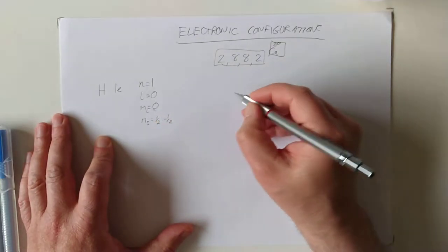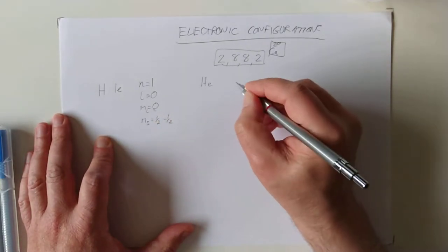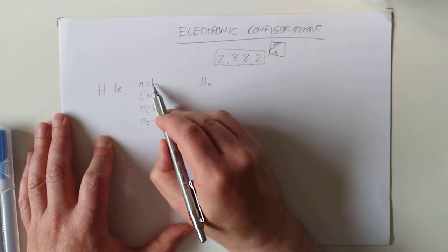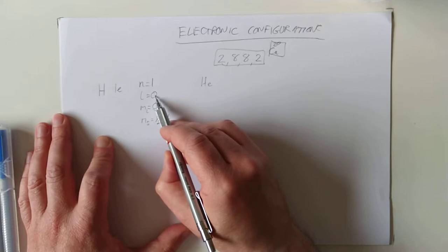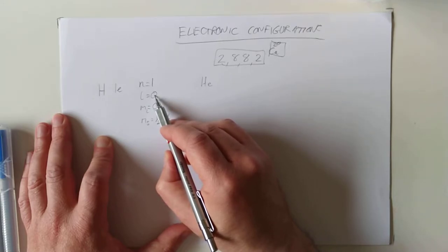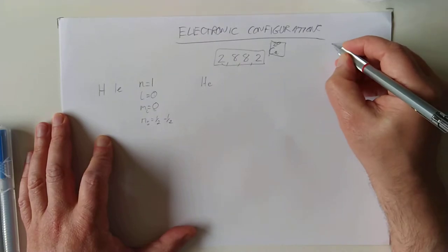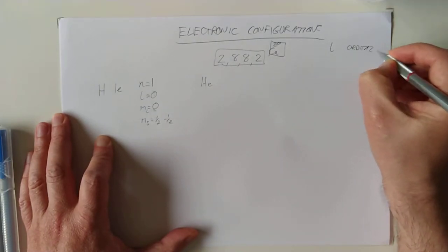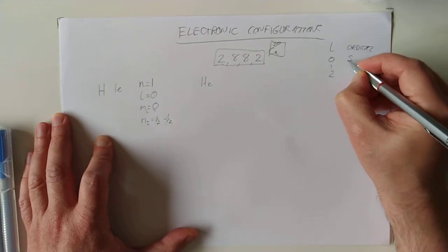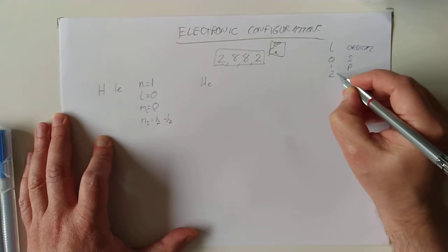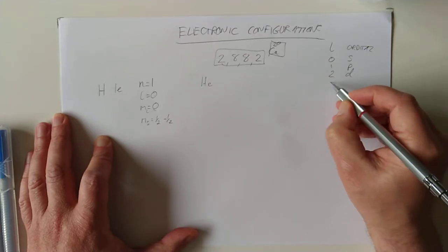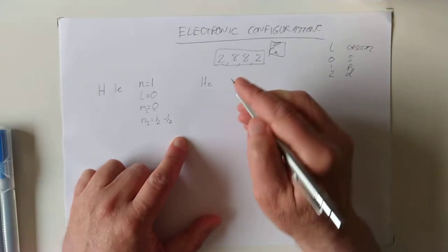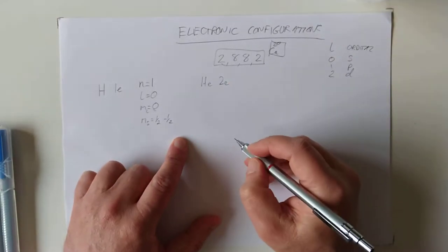If we skip across to element 2, which is helium, we now have two electrons. They are still in the first energy level, and they're in an s orbital — that's what that value tells you. Remember, we had different values of l and different types of orbital: l = 0 gives s orbitals, l = 1 gives p orbitals, l = 2 gives d orbitals — there are f orbitals as well, but we hardly ever talk about them. Helium has two electrons.